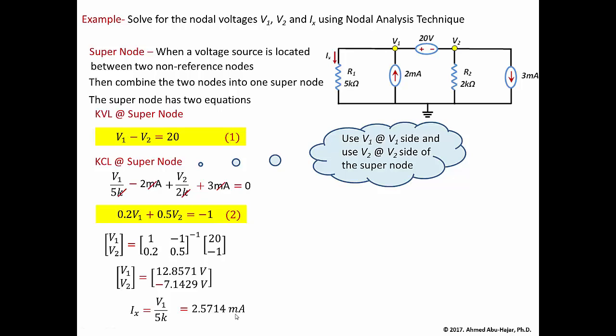We have solved a new type of nodal analysis problem. When a circuit has a voltage source between two non-reference nodes — like the 20-volt source here — we use the super node technique. The first equation states the voltage difference between the two nodes equals the voltage source (V1 − V2 = 20 V), and the second equation applies KCL by summing currents leaving the super node equal to zero, allowing us to solve for V1 and V2.